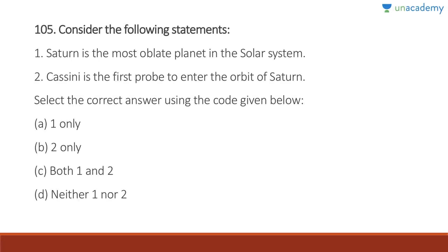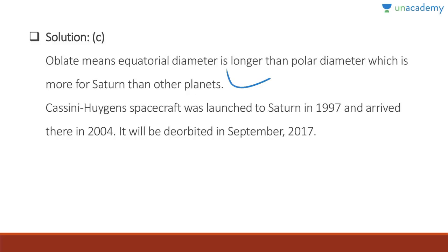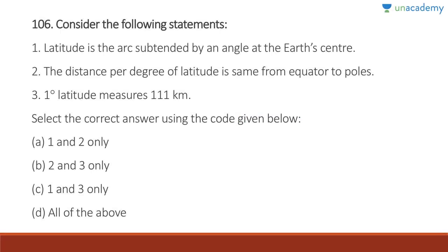Question 105: Saturn is the most oblate planet in the solar system — oblate means the equatorial diameter is longer than the polar diameter, and this is more pronounced for Saturn than any other planet. Cassini is the first probe to enter the orbit of Saturn — also correct. The Cassini-Huygens spacecraft was launched in 1997 and arrived seven years later. Answer is C, both one and two. Cassini-Huygens was de-orbited in September 2017.